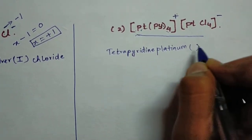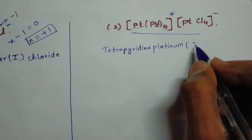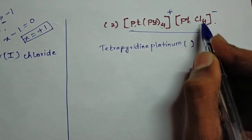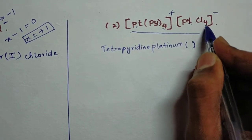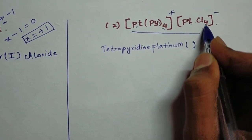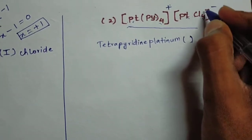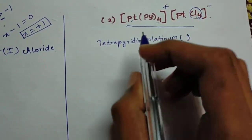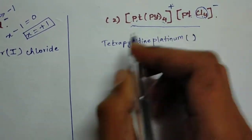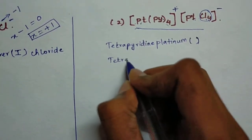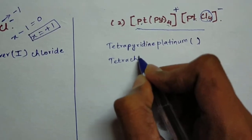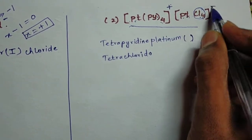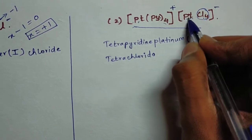Now we find the oxidation state. For the anion part, the chloride ligands each have an oxidation state of minus 1. With four chlorido ligands, the name for the anion part is tetrachloridoplatinate.